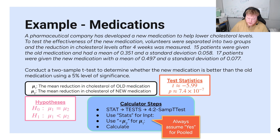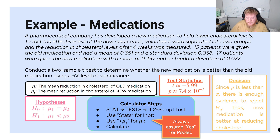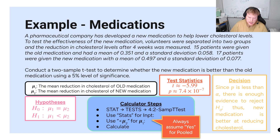That p-value is very, very small. Even with a significance level of five percent, the p-value is much less than that significance value. Therefore we have enough evidence to reject the null hypothesis, and thus the new medication is better at reducing cholesterol.